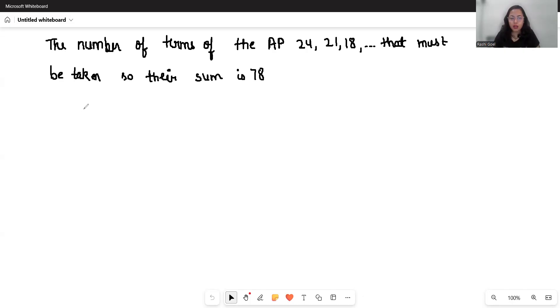So what is given? The first term A, that is 24. The common difference D, 21 minus 24, that is minus 3, and the sum of terms Sn is 78. So we have to find the number of terms, that is n here.